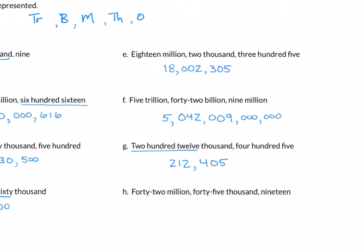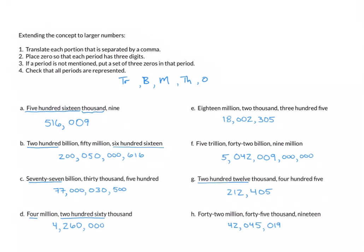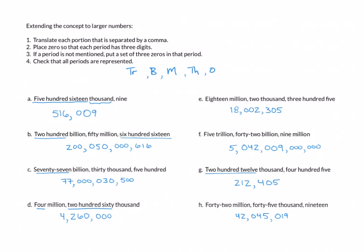Last example: forty-two million, forty-five thousand, nineteen. Forty-two million gives 4-2, comma. Forty-five thousand: no 'hundred' so zero in left, then 4-5, giving 0-4-5, comma. Nineteen in the ones period: 'teen' means one in the middle, nine in the right, with zero in front — giving 0-1-9. The full number is 42,045,019. That takes care of reading and writing numbers — section 1.1 is complete.